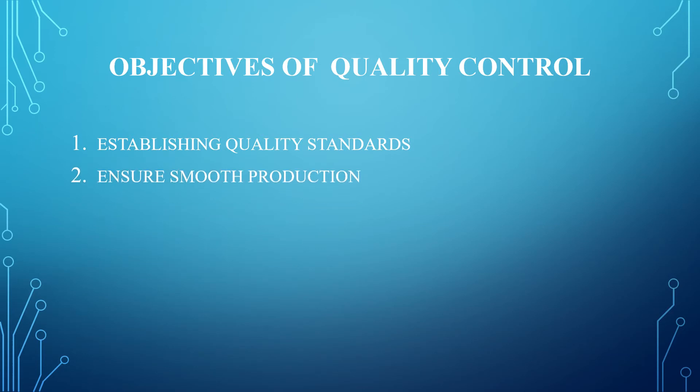The second objective is to ensure smooth production. There should not be any flaws — whether in receiving raw material, quality of raw material, or the manufacturing process — because if anything goes wrong, it definitely affects production. Quality control ensures smooth production without any interruptions.